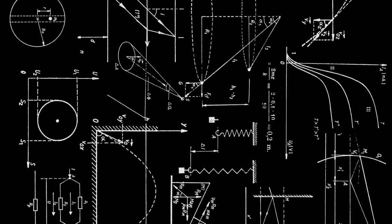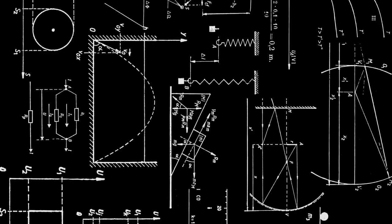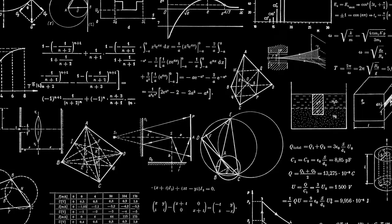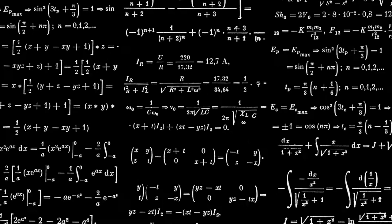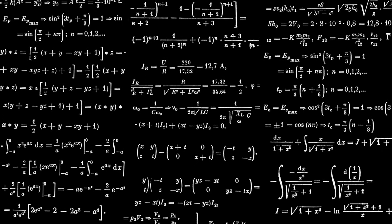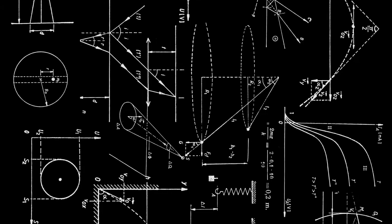Variables are denoted by letters of the alphabet, such as X, Y, Z, A, B, C, or sometimes T. Moreover, we're usually dealing with more than one variable at once, and thinking of the way in which one variable depends upon the other.